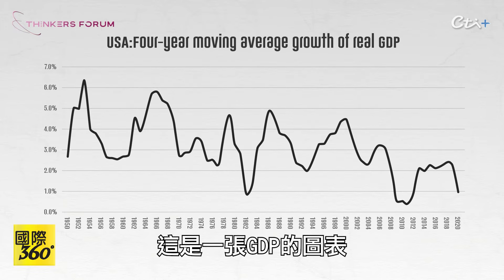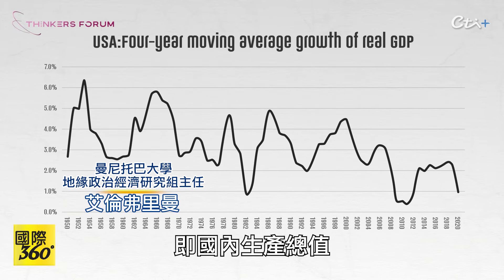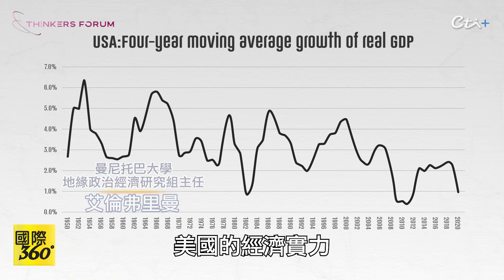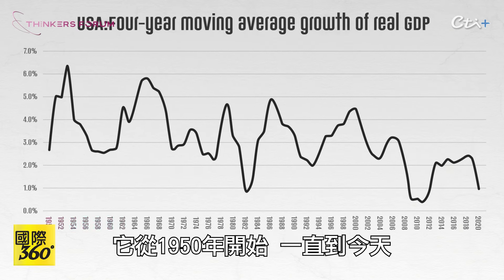This is a graph of the GDP — the gross domestic product, the output, the economic power of the United States. It starts in 1950 and goes up till today.